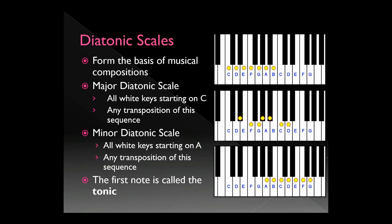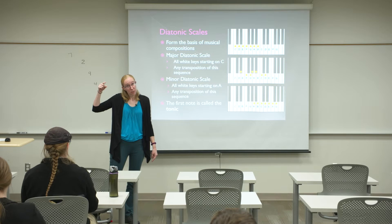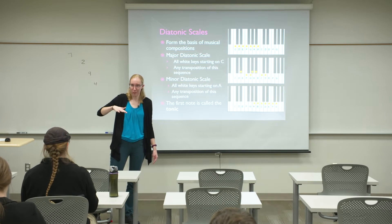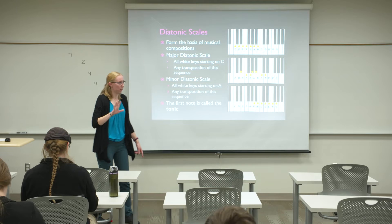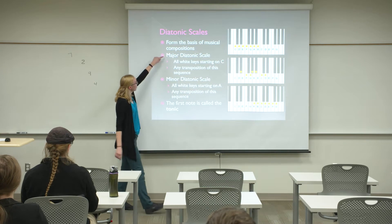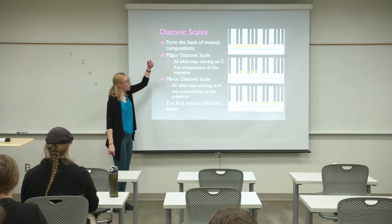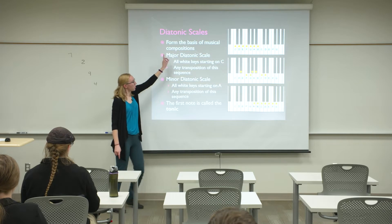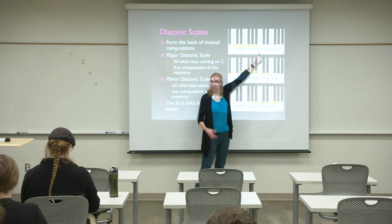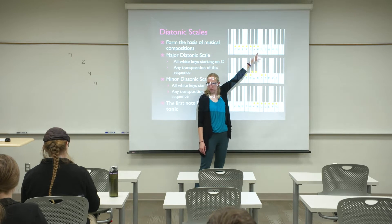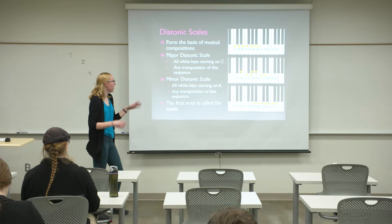What's important in music? We're going to talk about diatonic scales — these form the basis of most musical compositions. Think of 'Twinkle Twinkle Little Star' — we sing all the notes down a diatonic scale. The major diatonic scale: the easiest one is C major. Starting on C and playing all the white keys is C major. We can also transpose that.